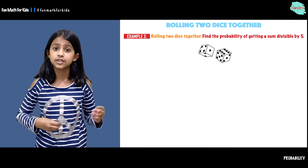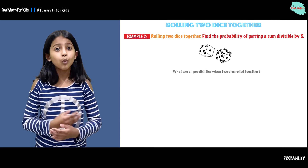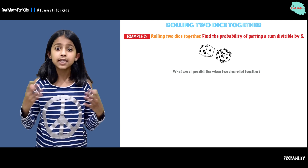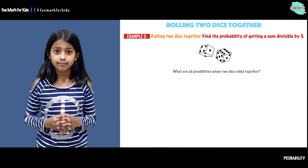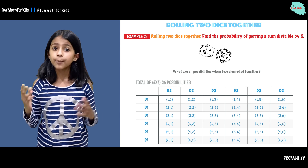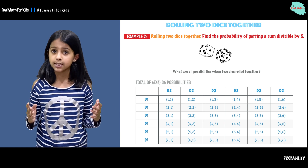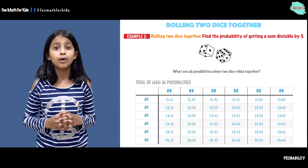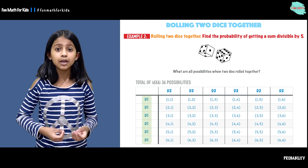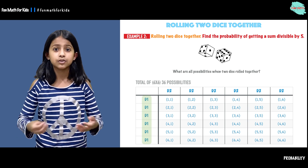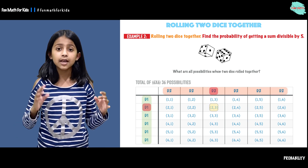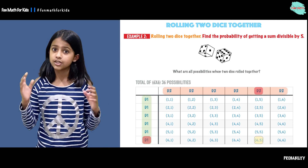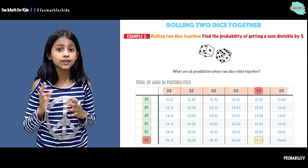Here we are rolling two dice together. When we roll two dice together, what are all the possibilities or outcomes we can get? Those possibilities and outcomes make up our sample space. There are 36 possibilities in total. For example, when we roll d1 and d2 together, we can get two on d1 and three on d2, or six on d1 and five on d2.